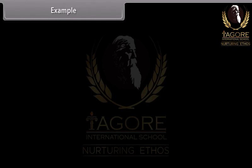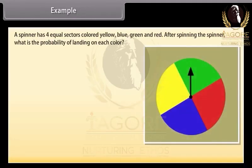Example. A spinner has four equal sectors colored yellow, blue, green and red. After spinning the spinner, what is the probability of landing on each color? Solution: